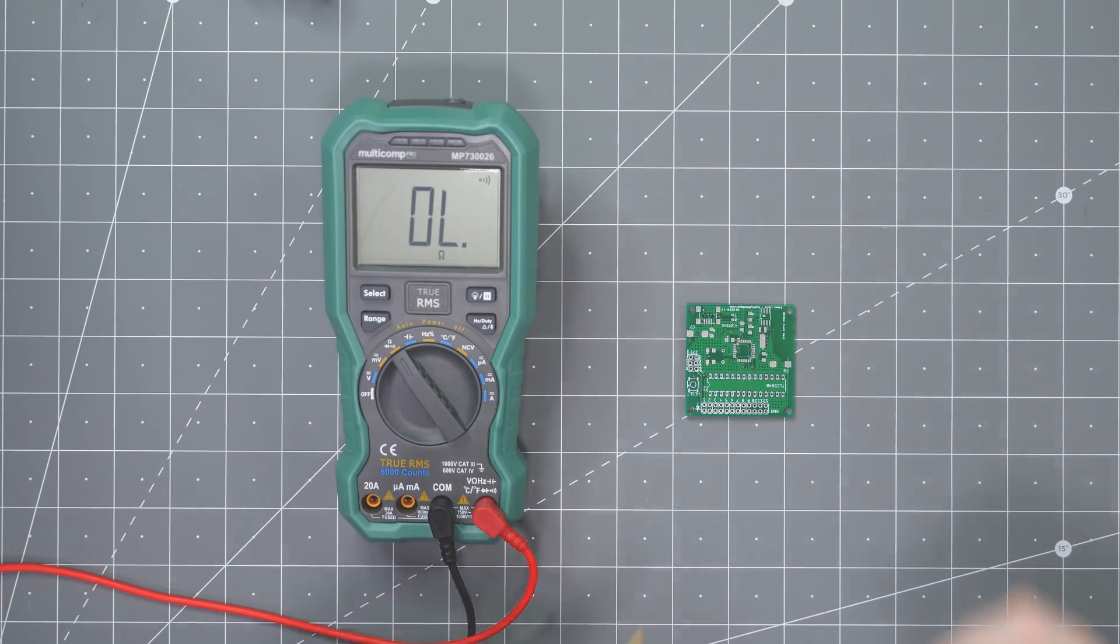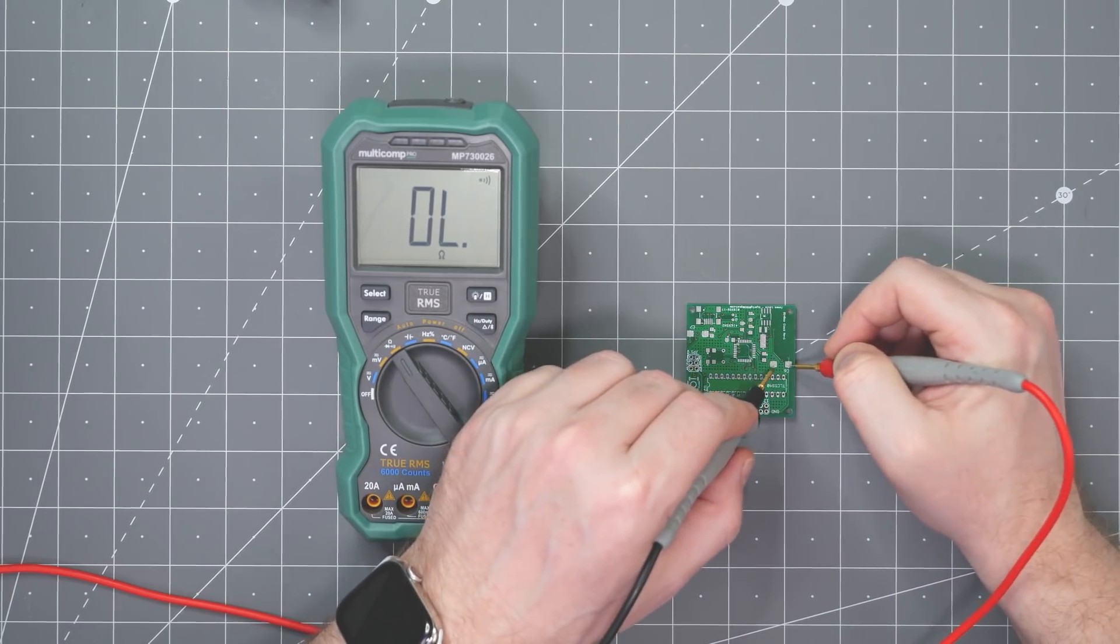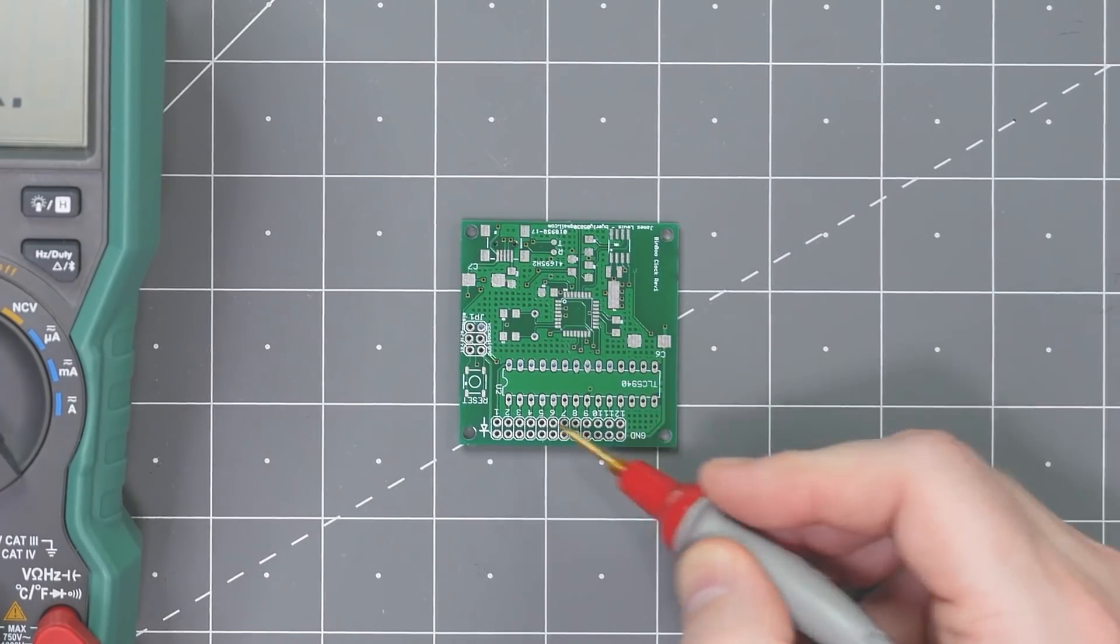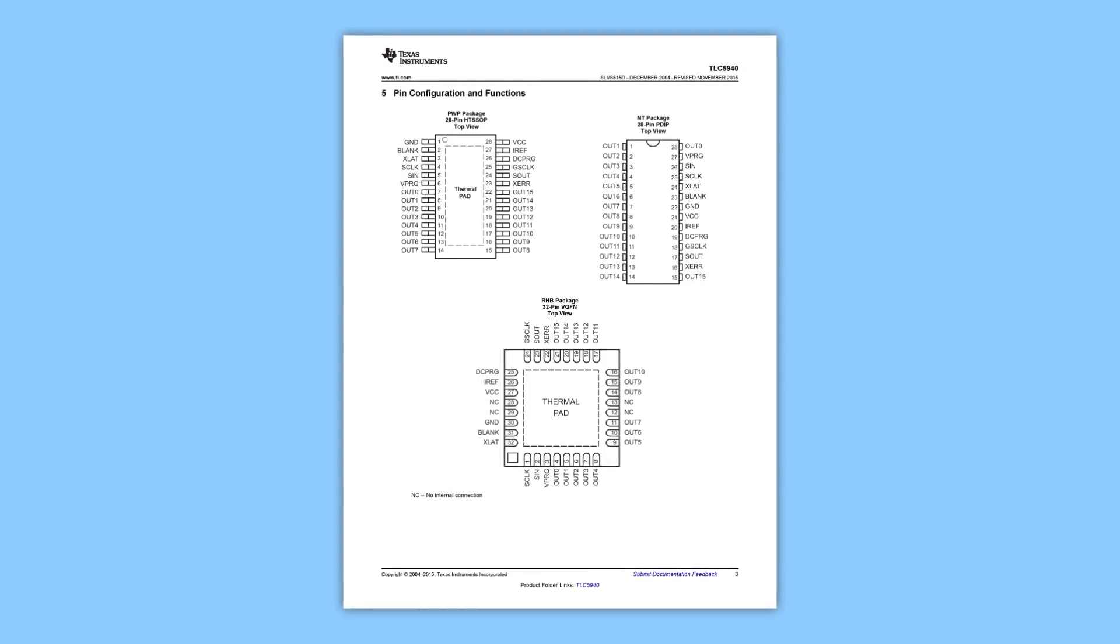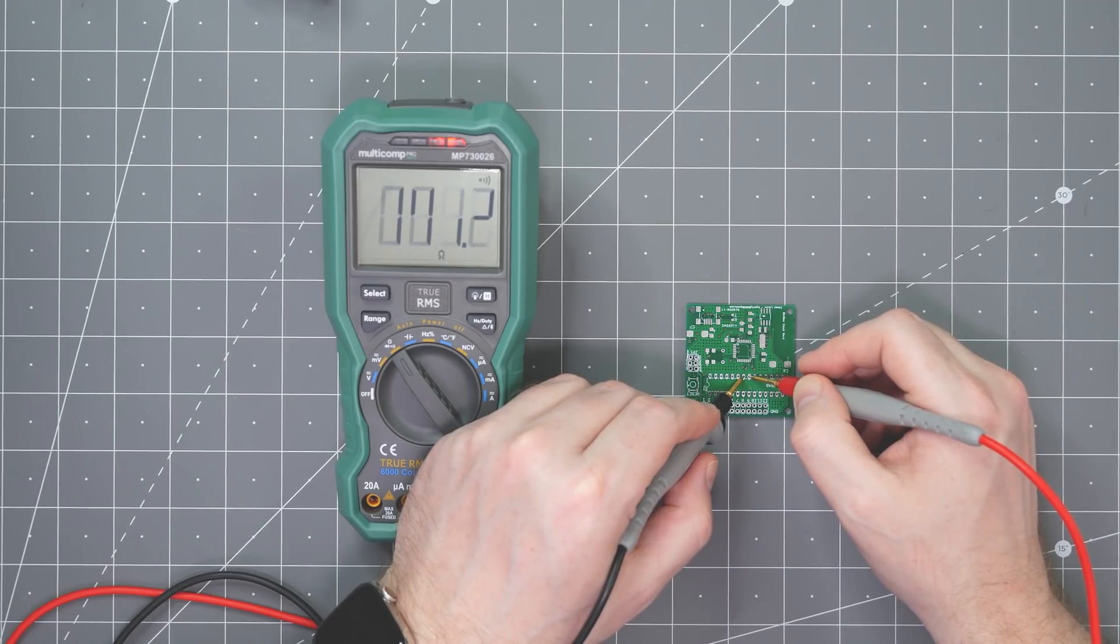Remember that VCC and ground are shorted together. As a next step, I checked out other VCC and ground pins to see if the problem exists everywhere, which it does. This big area is for the TLC 5940 chip. Looking at its datasheet, the VCC and ground pins are in the middle. And they are shorted here too.